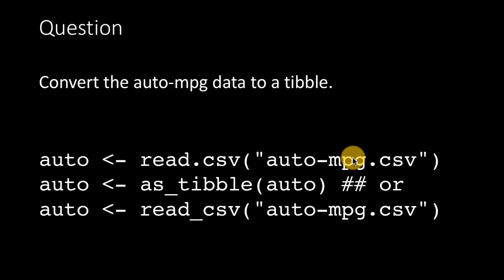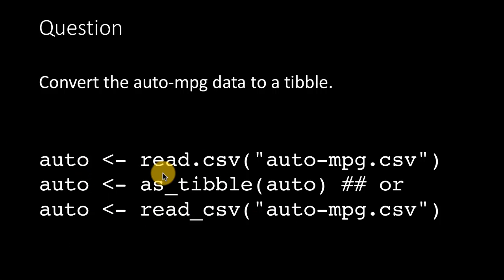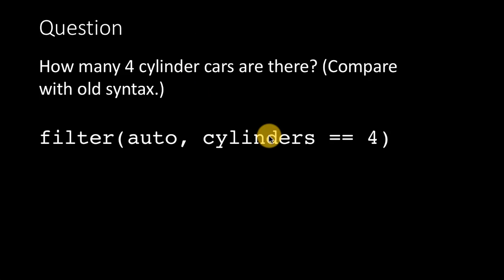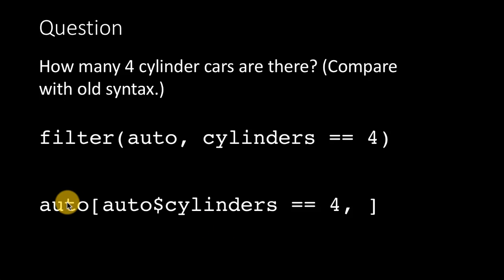Switching to the auto MPG dataset: read it directly as a tibble using read_csv(), or use as_tibble() to convert a data frame. To find how many four-cylinder cars there are, write filter(auto, cylinders == 4). Compare this to the older base R syntax: auto[auto$cylinders == 4, ] — the dplyr filter syntax is much easier and more user-friendly.